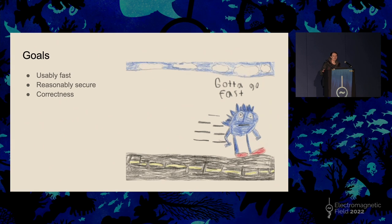My goals for this project were to have reasonably fast cryptography. Scratch itself is quite a slow language — it's interpreted, and the interpreter runs in JavaScript, so there are a lot of layers of slowness. But I don't want to be waiting all day for a small message to encrypt. I also want it to be reasonably secure, though it's more of a prototype. And finally, I really want it to be correct — matching specifications so that if I encrypt something in Scratch, I could decrypt it in Python, making it compatible with other implementations.